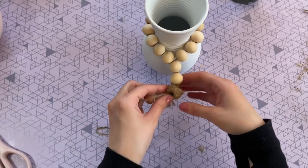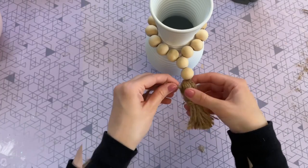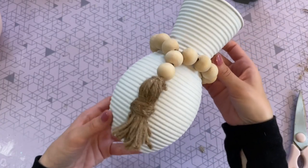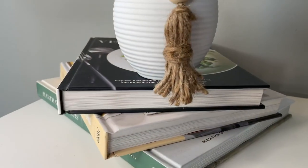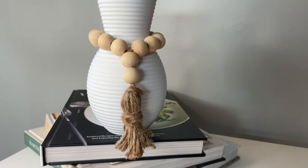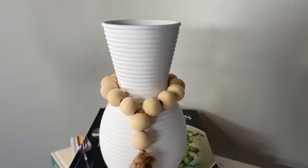And now I'm just going to attach my tassel to my strand. You can even use this same technique just to make a wood-bead garland just like this, but I think it adds such a fun boho feel to any vase. And here is a closer look on how it turned out.